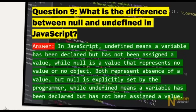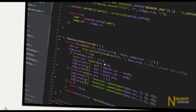Question number nine: What is the difference between null and undefined in JavaScript? Undefined means a variable has been declared but has not been assigned a value, while null is a value that represents no value or no object. Both represent the absence of a value, but null is explicitly set by the programmer while undefined means a variable has been declared but not assigned a value.